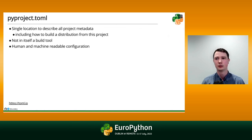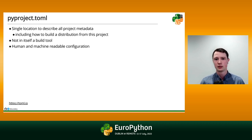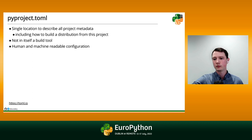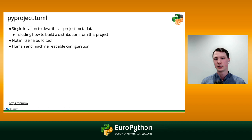So what is the pyproject.toml? It is designed to be a single location for you to put all your metadata, so you only have to have one file. It's tool agnostic — any tools can use it and they can share it between different tooling. Depending on the tools you're using besides just packaging, it could very well be the only source of all your metadata, which is nice. But it's not itself a build tool. pyproject.toml isn't something that you can run, and it's not something that can package for you — it's just a place where you put data.